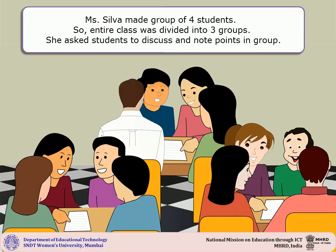After presenting tasks to the students, Ms. Silva divided the entire class into groups. There were 12 students in the class, so she made 3 groups with 4 members in each group. She informed them to discuss in their group and note down important points related to the tasks. In the first step, students teamed up for their learning. Throughout the process, Ms. Silva supervised the group processing and discussion closely and intervened whenever and wherever necessary.